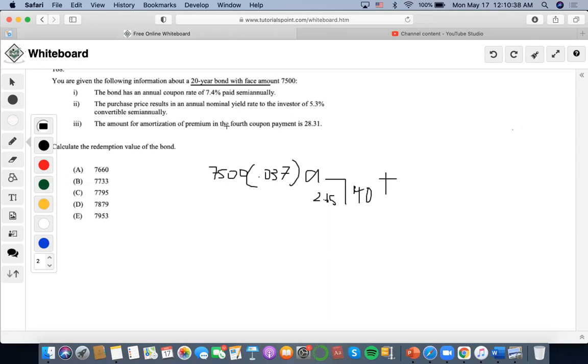So what does that mean? That means we would have to subtract two different book values, and that would equal $28.31. So if the amount for amortization of premium and the fourth coupon payment is $28.31, then...